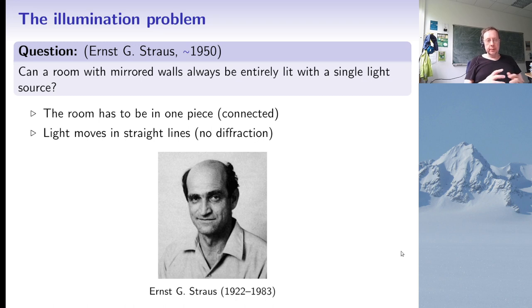Let me start by explaining what is the illumination problem. The question was originally posed in the early 1950s by mathematician Ernst Strauss. The question is if you have a room with mirrored walls, is it always possible to light it entirely with a single light source? To be precise, we assume that the room is in one piece, what we call connected in mathematics, and we work in the approximation of geometrical optics, which means that light moves in straight lines. So we ignore diffraction and interference phenomena.